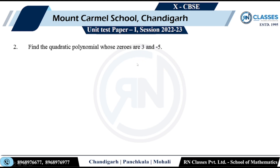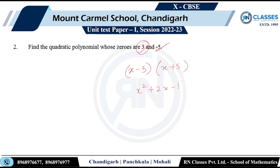Second question: find the quadratic polynomial whose zeros are 3 and minus 5. Now if the zero is 3, the factor is x minus 3. If the zero is minus 5, the factor is x plus 5. Multiply the two and you will get the quadratic polynomial. It will turn out to be x squared plus 2x minus 15.